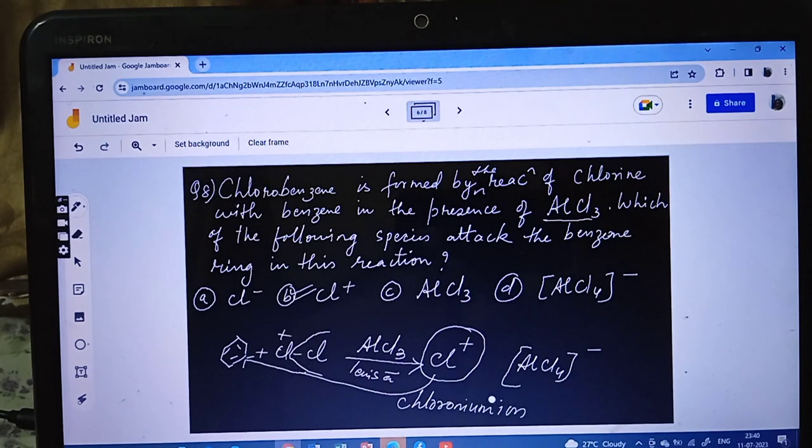This chloronium ion will attack the benzene ring. That means it will join with the benzene ring and we'll get chlorobenzene with Cl. So option B is the correct one.